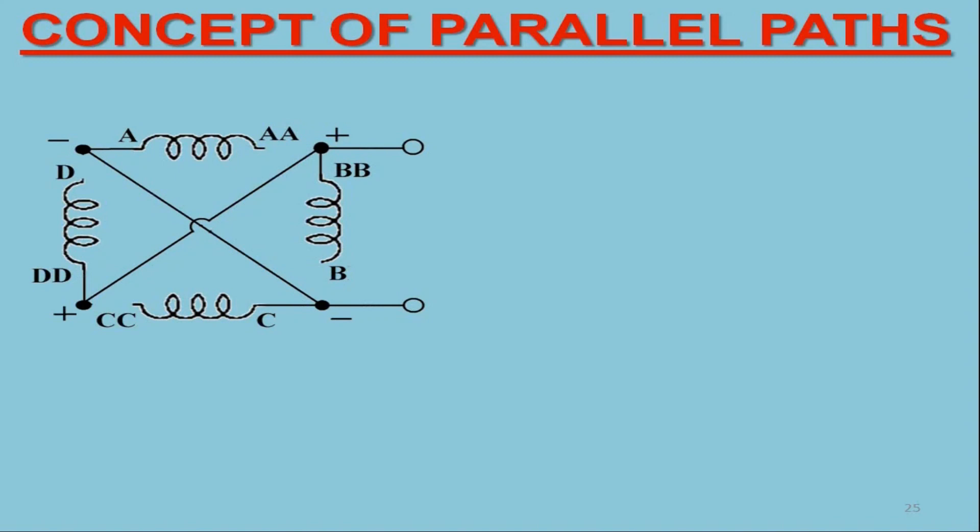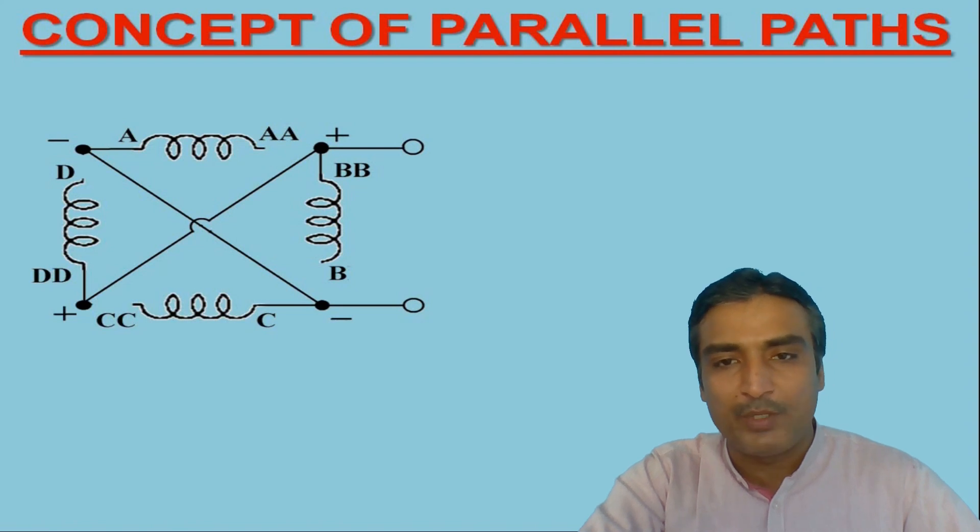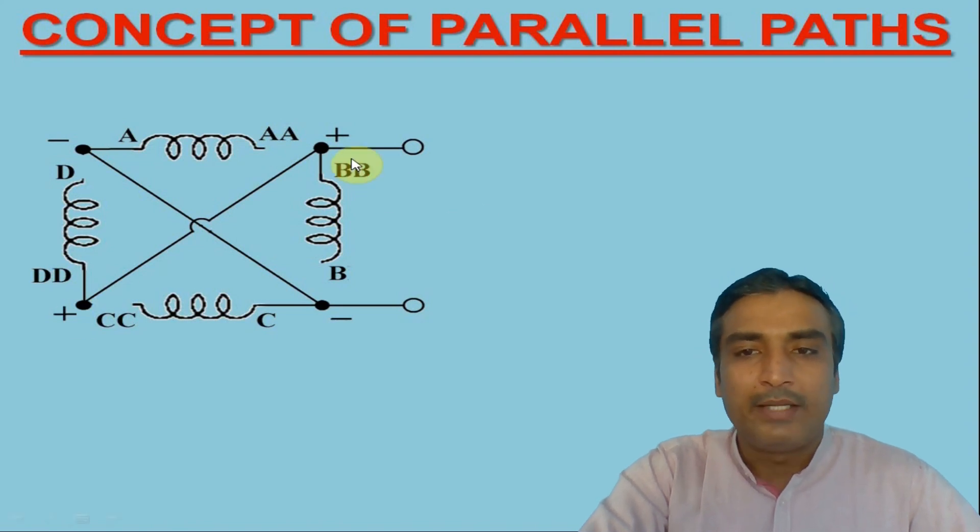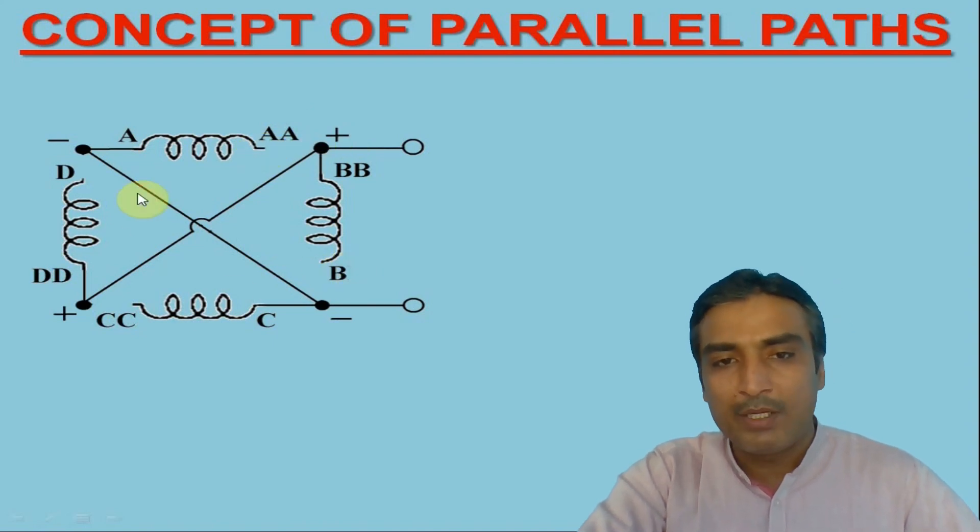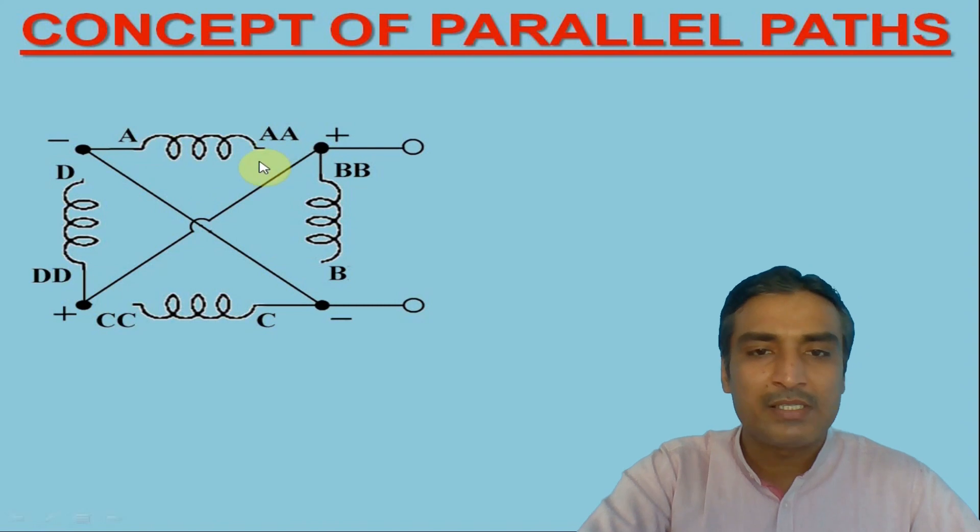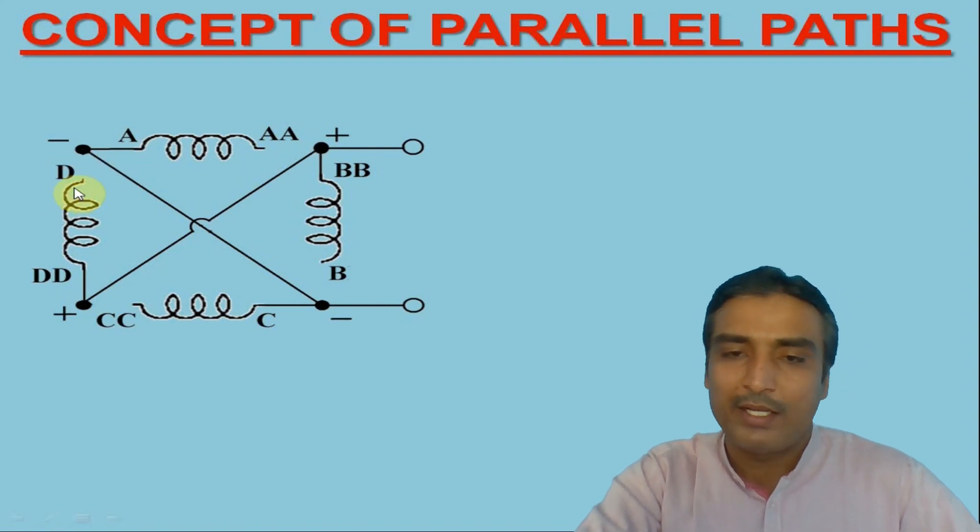Now see what happens when the armature coils are arranged in a different manner. However, before making another arrangement of armature coil, let us first remove the connections between AD, BC, AABB and CCDD as illustrated in this figure.